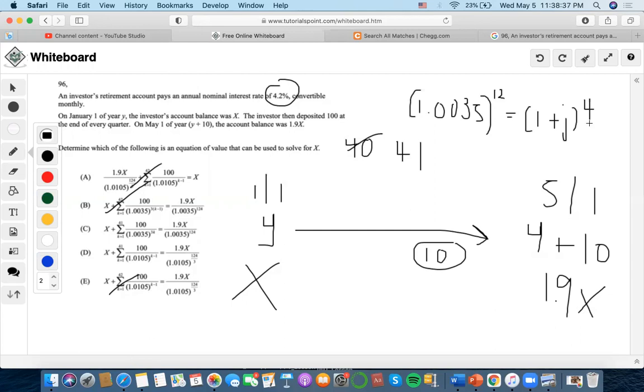Now I'm also going to do 1.0035 to the 12th, and then to the 1 over 4, and then minus 1. And I'll find out that J is 0.0105367. So that is the quarterly effective rate.